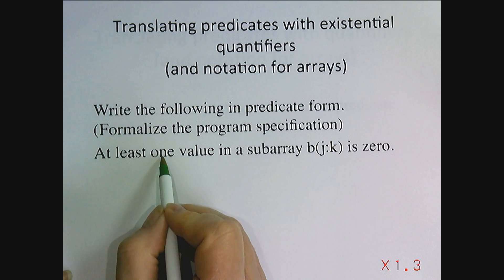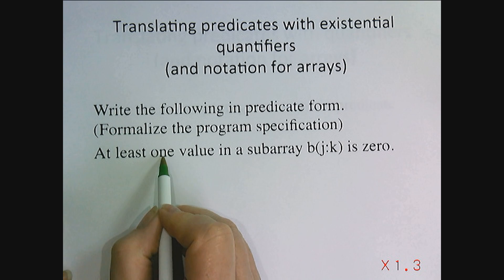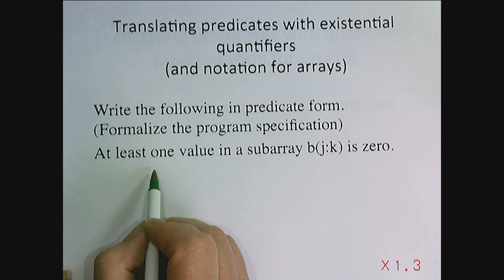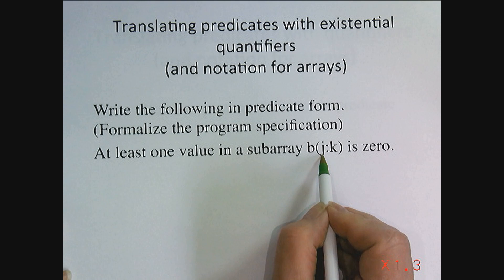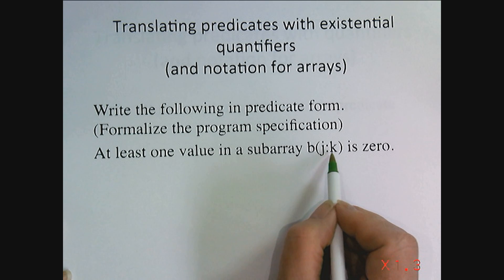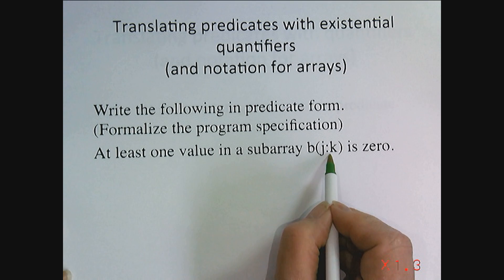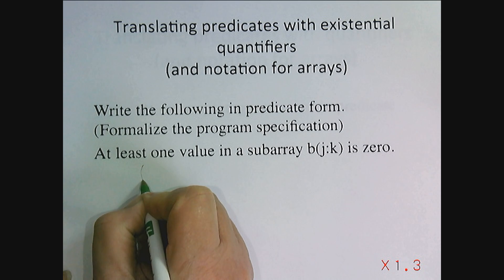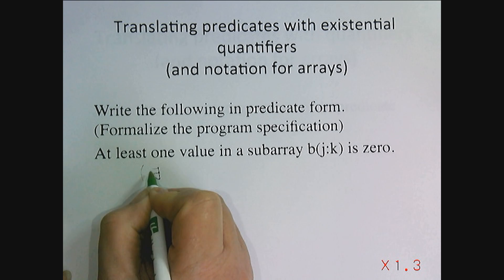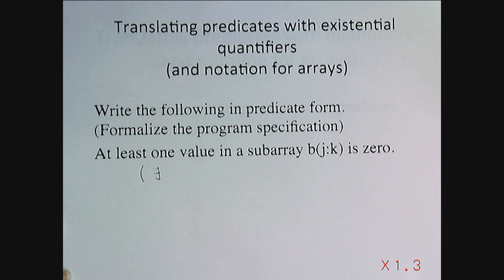At least one means there is one or more, which means either b(j) is zero or the next one is zero or the next one is zero, or one of them for some value in this subarray k must be zero. So it is a there exists expression.